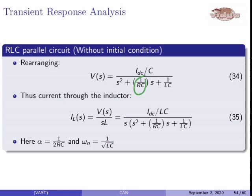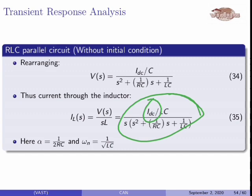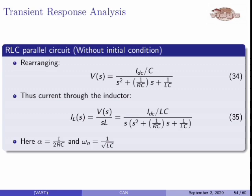Rearranging, this is similar to the series RLC result, with alpha equal to 1/2RC for the parallel circuit, compared to R/2L for the series circuit. Omega natural frequency omega_n equals 1/√LC. The damping conditions are: critically damped when alpha equals omega_n, over-damped when alpha is greater than omega_n, and under-damped when alpha is less than omega_n. This completes the parallel RLC circuit analysis.